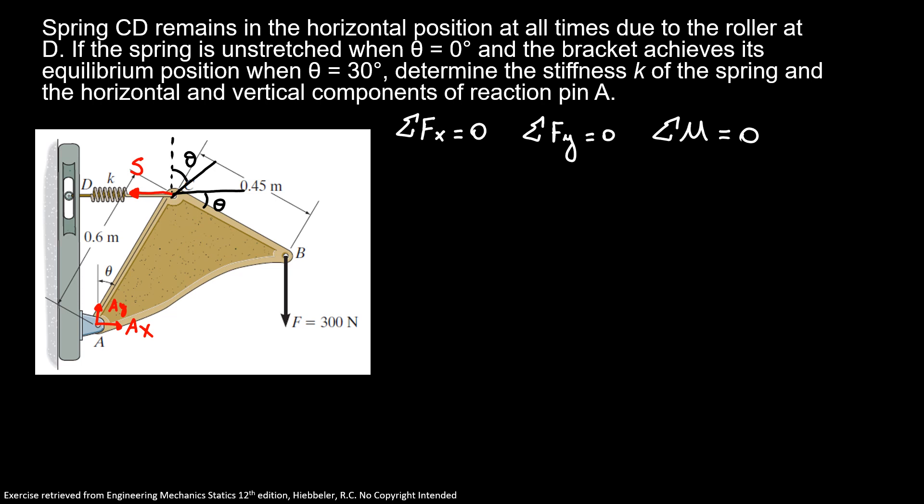So first I'm gonna use the sum of moments about A equals zero, starting with our force S. S is at a distance, our moment arm is 0.6 times cosine of 30 degrees, that's our theta. I'm turning counterclockwise so I have a positive. So S times 0.6 times cosine of theta.